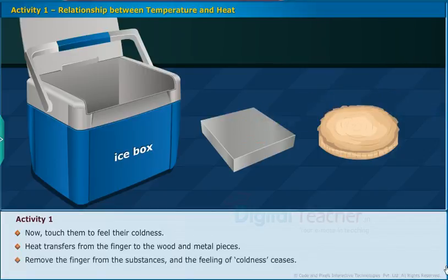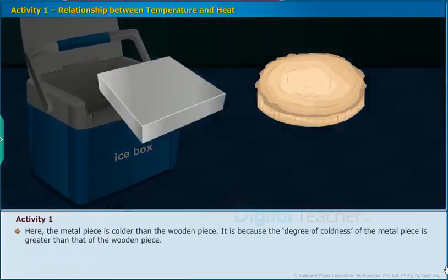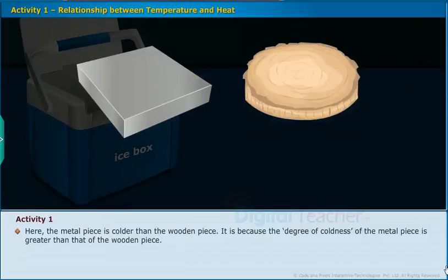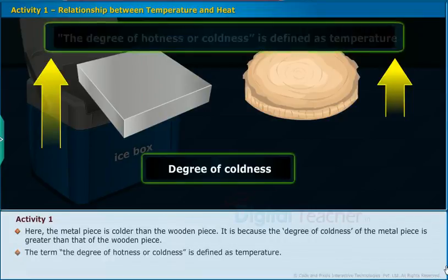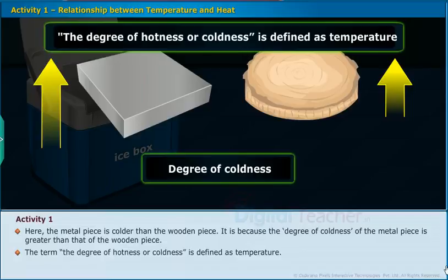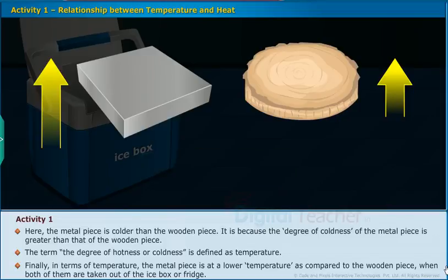Remove the fingers from the substances and the feeling of coldness ceases. The feeling of hotness or coldness involves transfer of heat from the substances to the body. The metal piece is colder than the wooden piece because the degree of coldness of the metal piece is greater than that of the wooden piece. The degree of hotness or coldness is defined as temperature. In terms of temperature, the metal piece is at a lower temperature compared to the wooden piece when both are taken out of the fridge.